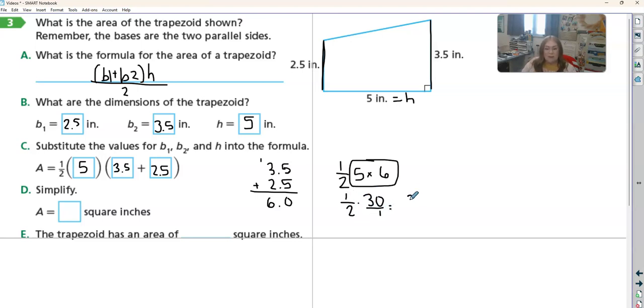If I do out this problem, 30 times 1 is 3, 2 times 1 is 2. 30 divided by 2, which is what we would say, right? I want half, I'm cutting that in half, dividing by 2. 30 divided by 2 is 15. In a sentence: the trapezoid has an area of 15 square inches.